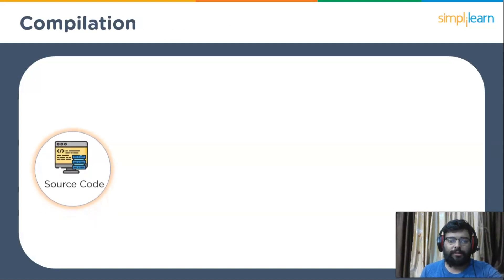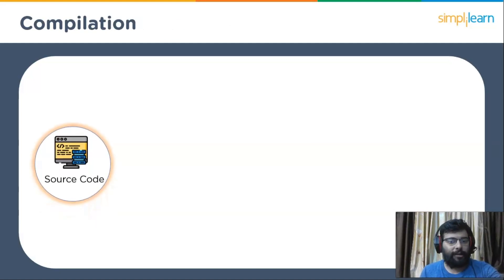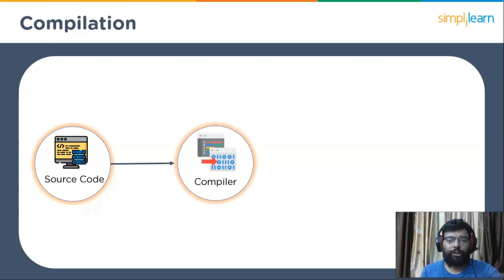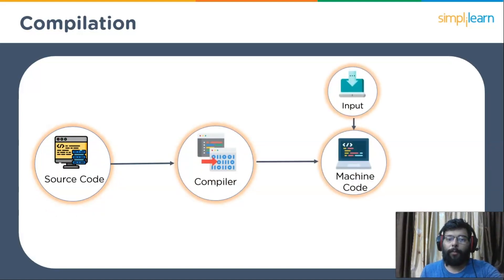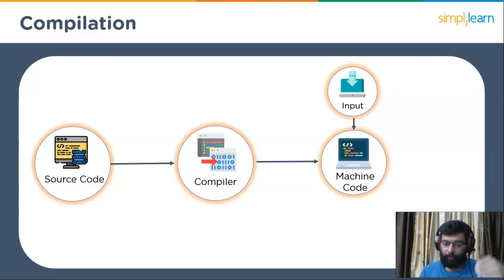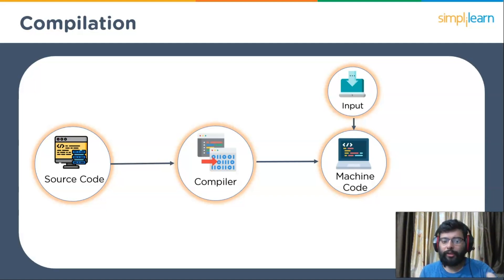Compilation is the process in which source code is translated into machine-readable code, or it serves as input to another compiler or interpreter. It takes the whole code file as input, translates the code once into object code, which can then be run many times. It will not execute the machine-readable code it produces.